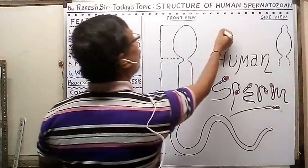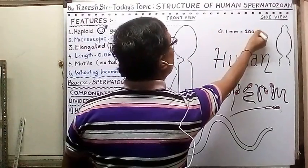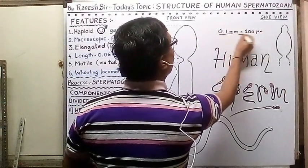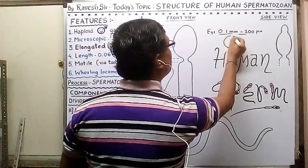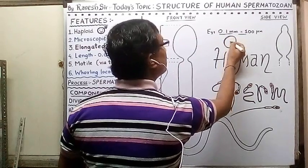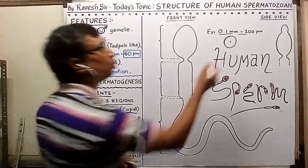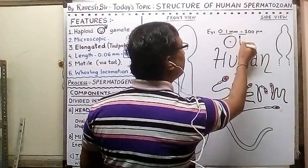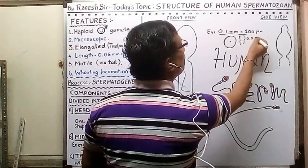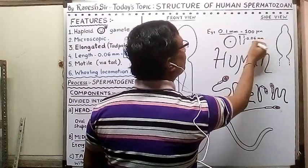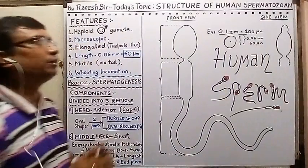For comparison, the egg has a diameter of 0.1 millimeter, which equals 100 micrometers. The sperm is roughly 0.06 millimeters, that is 60 micrometers. So the sperm is very tiny compared to the ovum — the ovum is actually larger than the sperm.